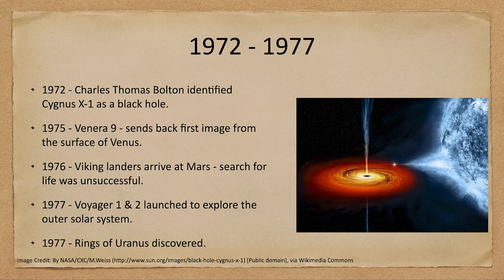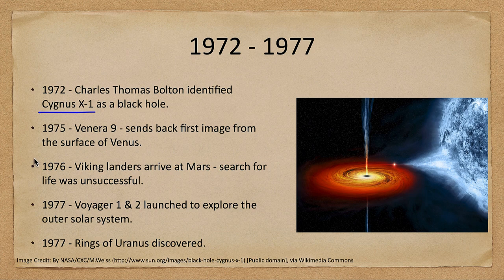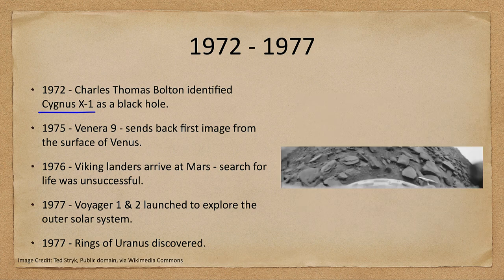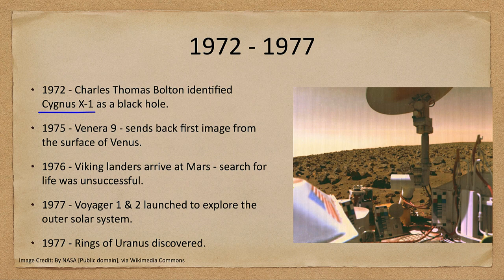Later in the 1970s, we had the identification of Cygnus X-1, a well-known binary star system consisting of a massive star and a dark unseen companion, confirmed as a black hole in 1972. In 1975, the Venera 9 spacecraft gave us the first image of the surface of Venus. And in 1976, the Viking lander landed on the surface of Mars, looking for the possibility of some kind of life there.